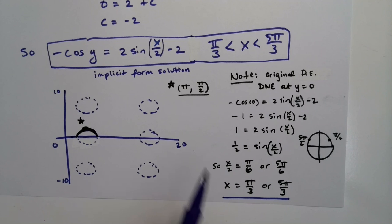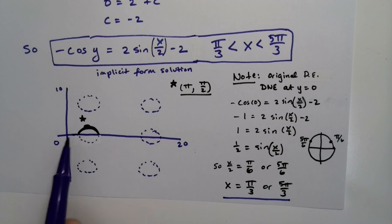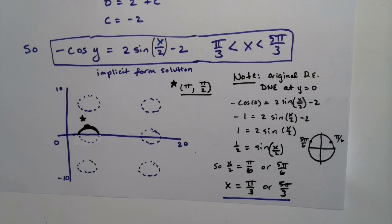All right. So we drew all the infinite graphs, we picked out the one we want, and that meant we had to have a domain restriction to look at the particular one that we were looking for, which in this case was π over three to five π over three.